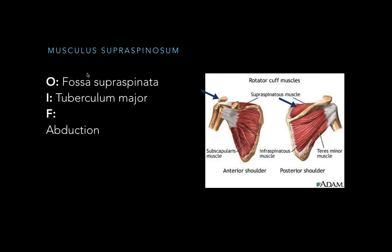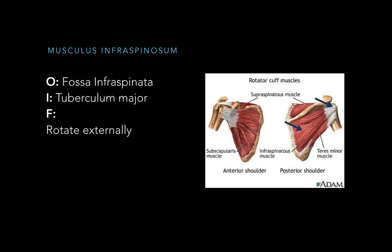Musculus supraspinosum covers the fossa supraspinata and inserts at the tuberculum major. When this muscle contracts, it abducts the arm, pulling it to the side. The next muscle, musculus infraspinosum, covers the fossa infraspinata and inserts at the tuberculum major on the back side. When this muscle contracts, it rotates the arm externally.